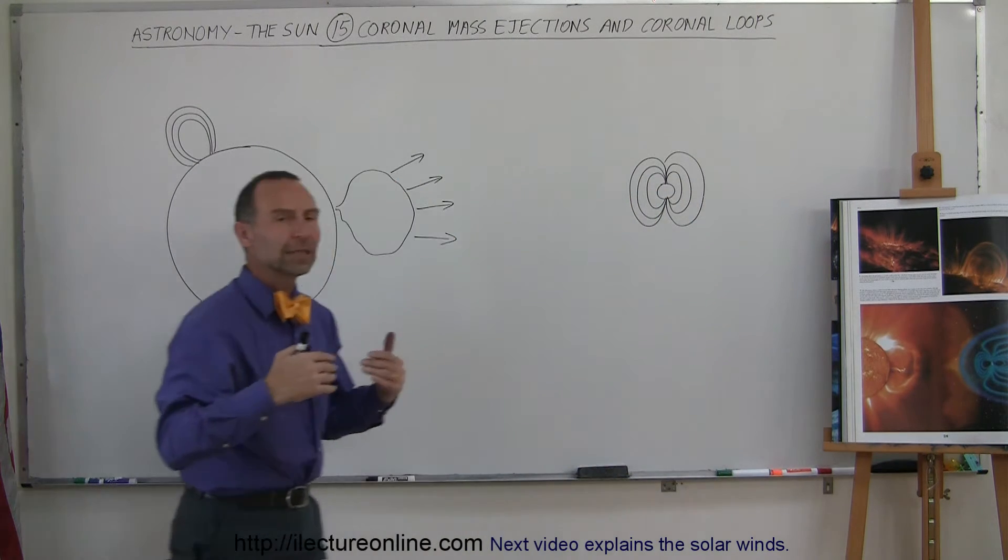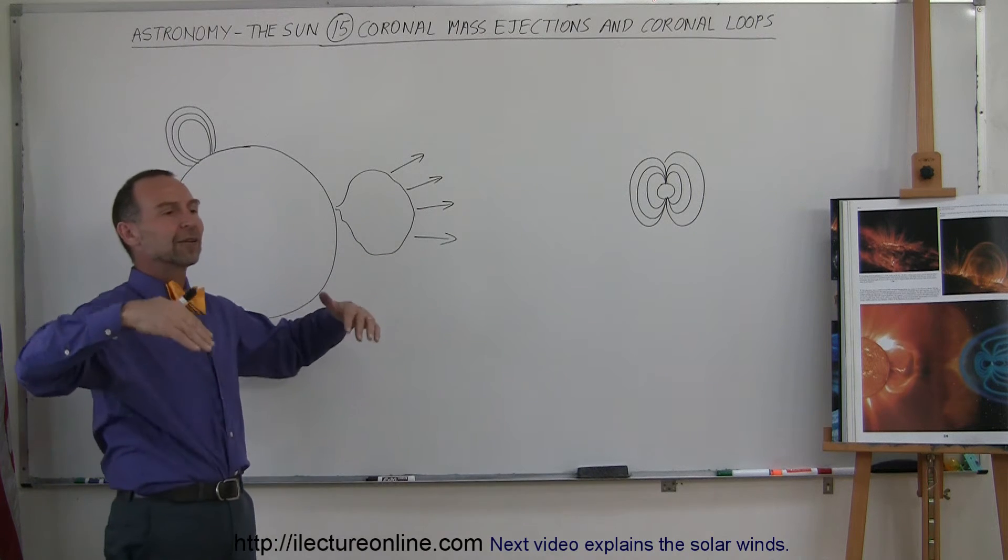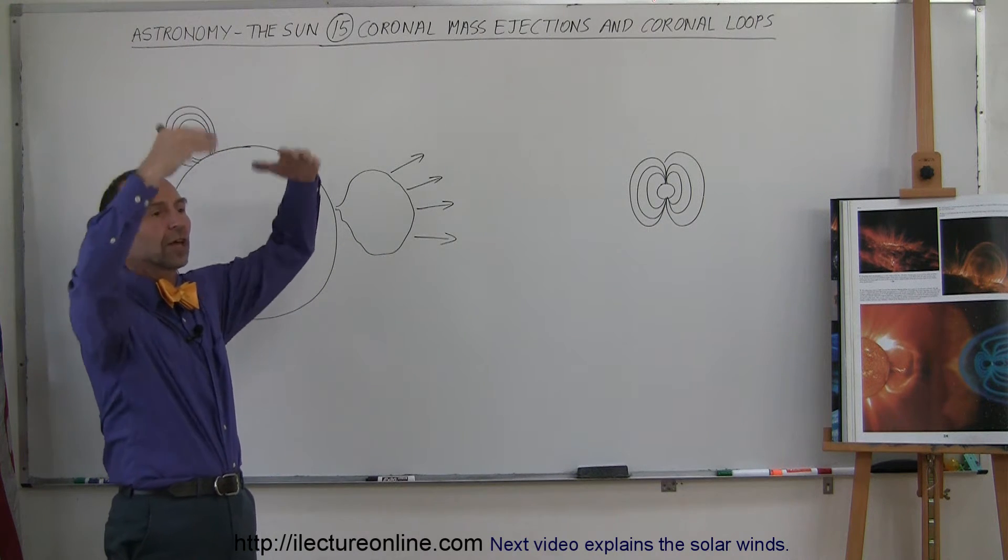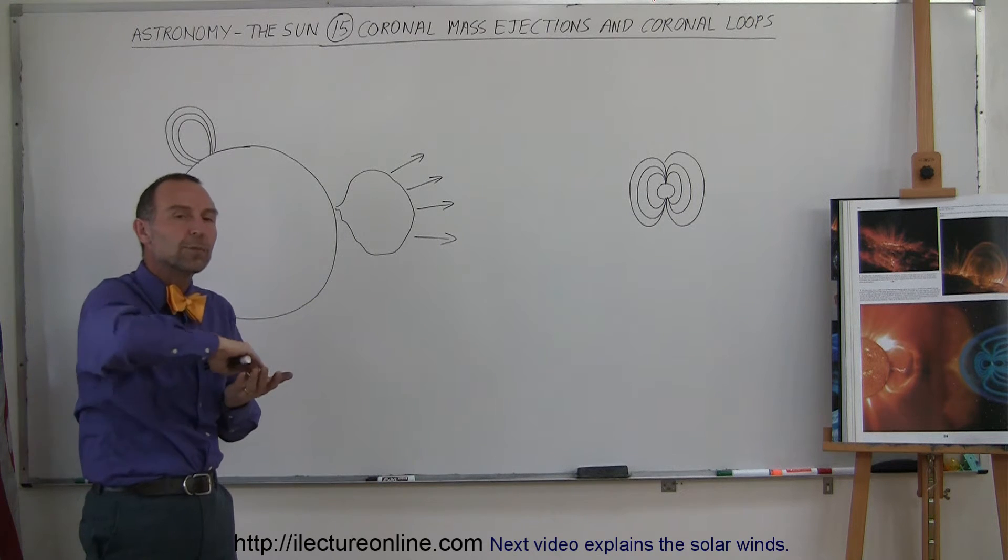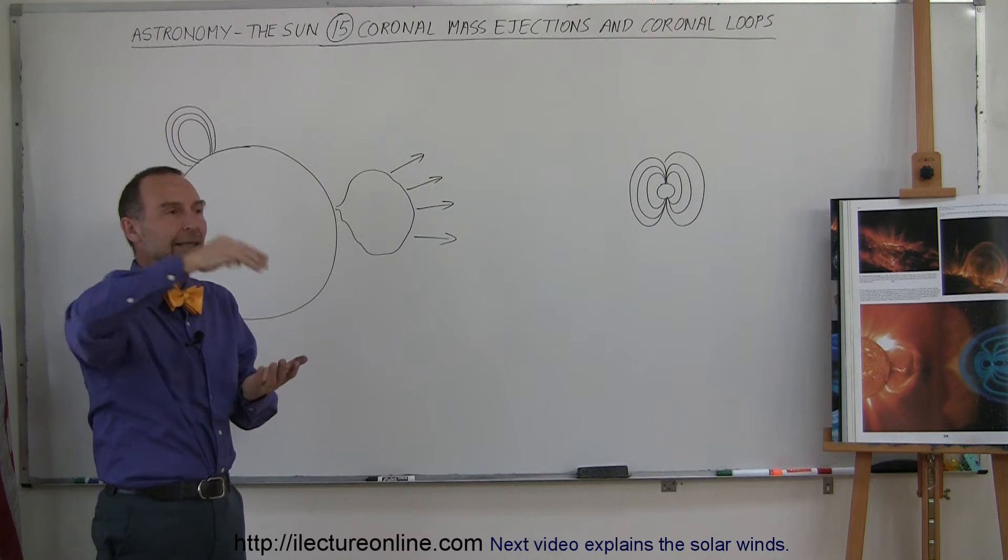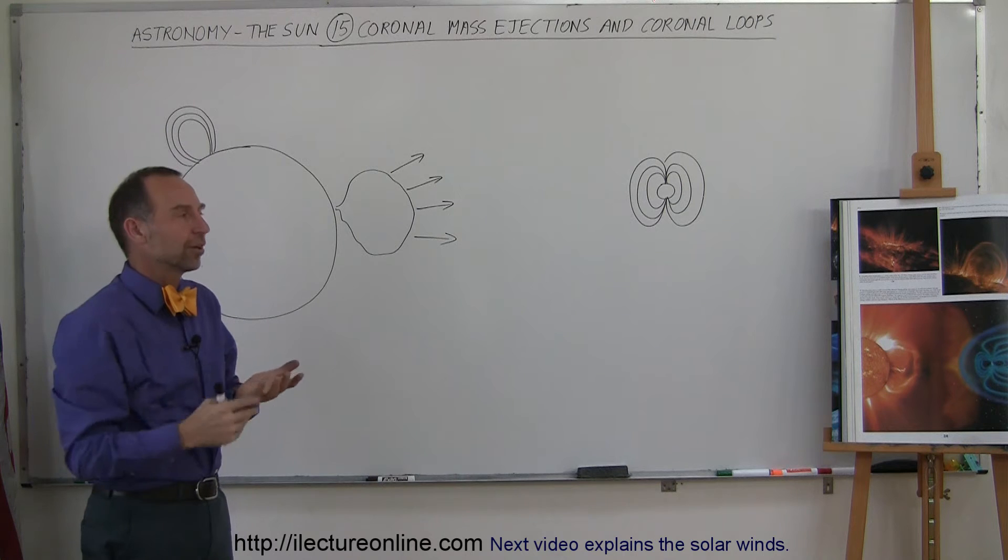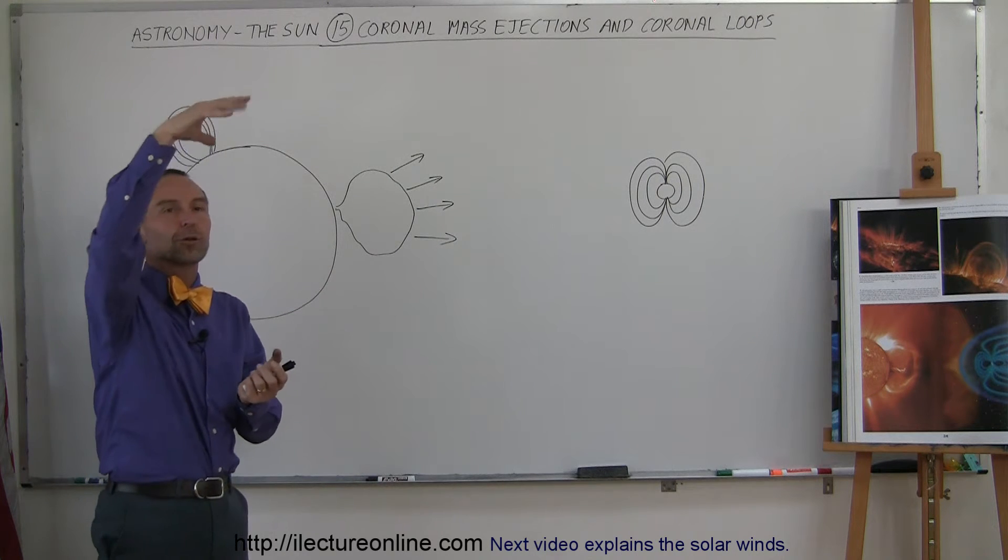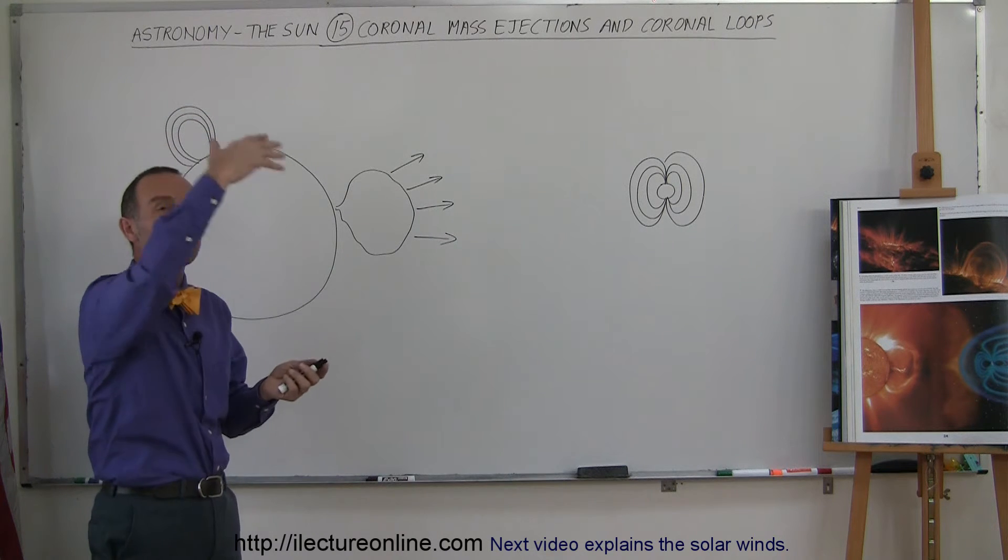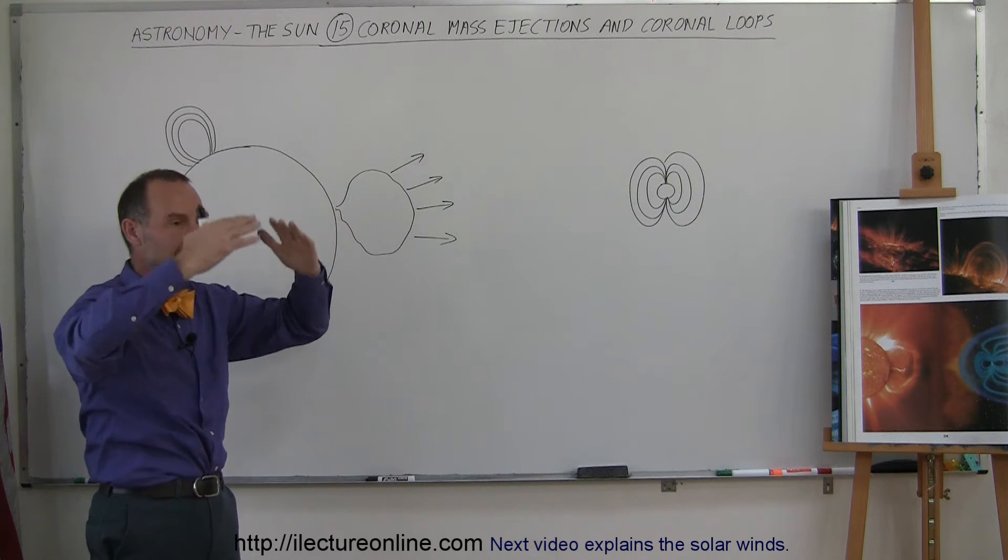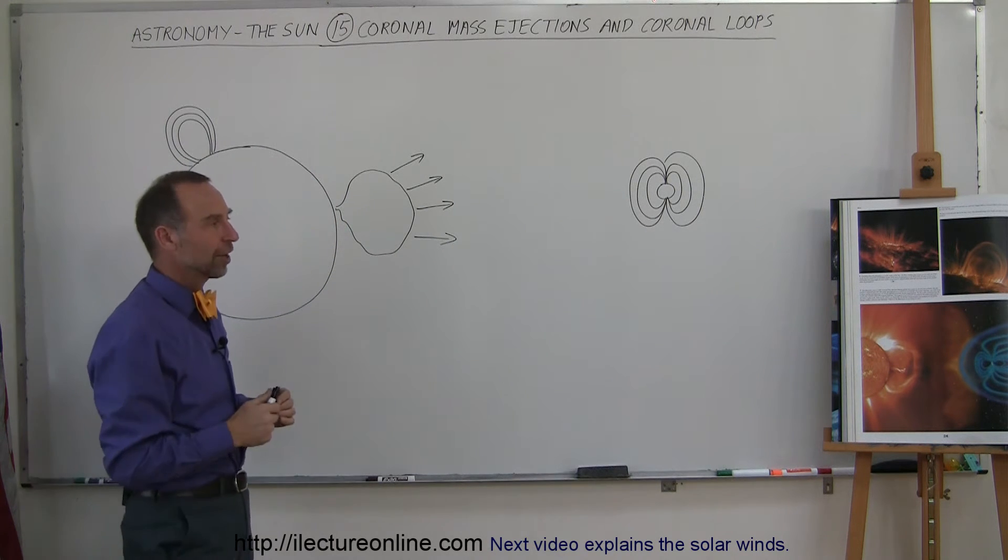And what happens is when the solar activity gets very high, the magnetic field lines sometimes loop way out of the surface of the sun, pulling with it enormous quantities of matter that then rains back down to the sun. It almost looks like a rain of solar material that falls back to the sun. And that can go on for hours and hours until the loops sink back down into the surface of the sun.